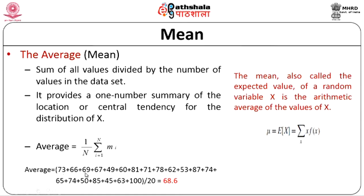For example, for a data set from 73 to 100 with 20 values, we sum all the numbers and divide the total sum by 20, which equals 68.6. So 68.6 is the mean or average of this data set. This number is considered a one-number summary which clearly tells you the central tendency of the distribution. Mean is also called the expected value of a random variable, denoted mu, and is generated by its arithmetic average: E(x) = summation of the variable with respect to its probability distribution function.